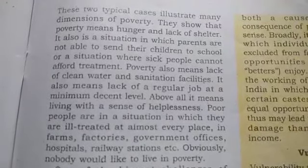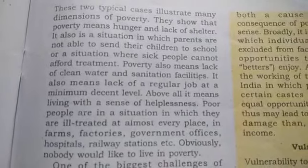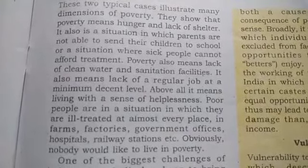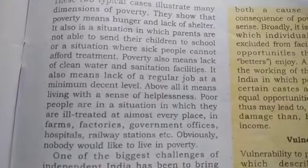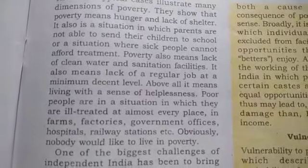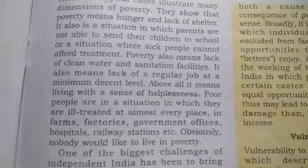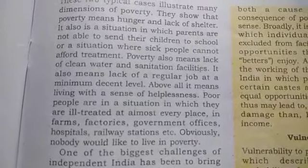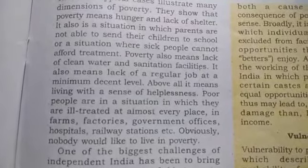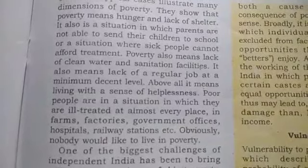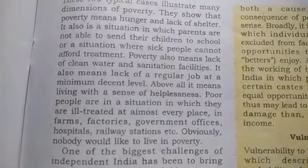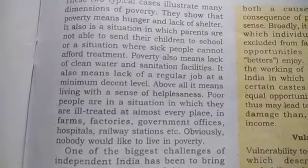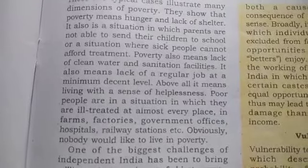These two typical cases illustrate many dimensions of poverty. Poverty as seen by social scientists: social scientists analyze poverty from many aspects besides level of income and consumption. These aspects include poor level of literacy, lack of access to healthcare, lack of access to sanitation and safe drinking water, malnutrition leading to poor resistance to disease, and lack of job opportunities.